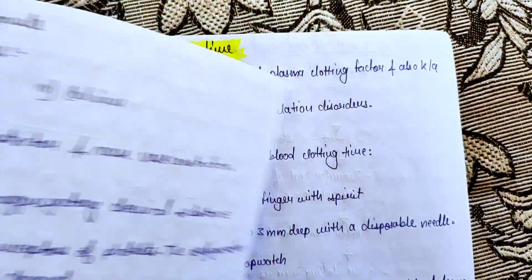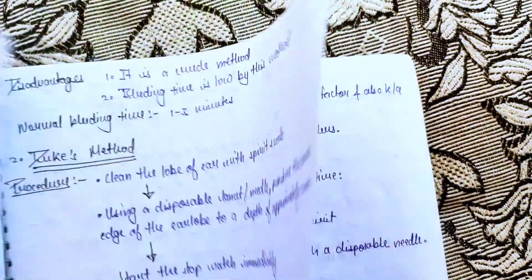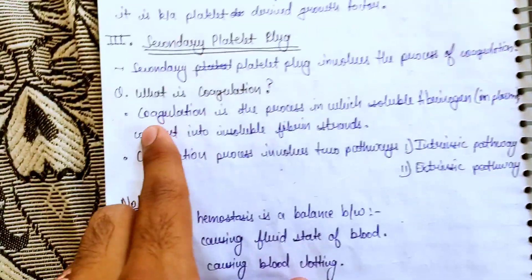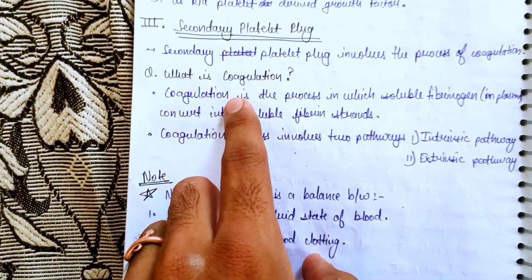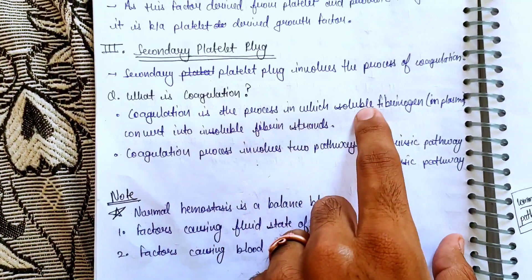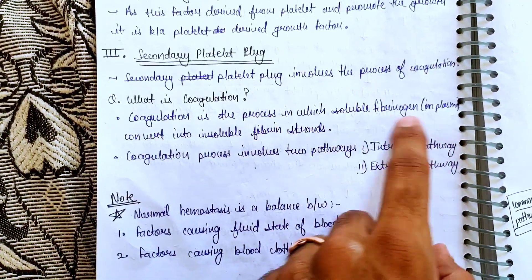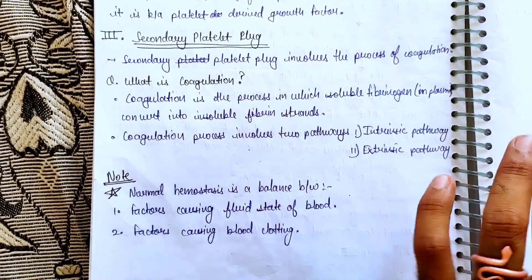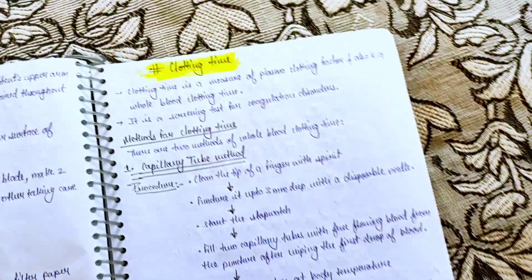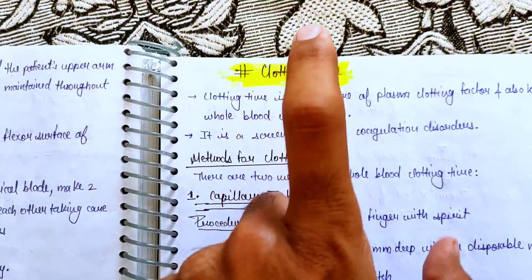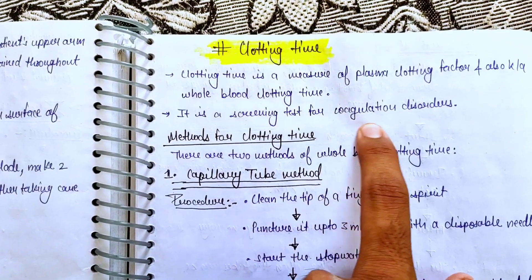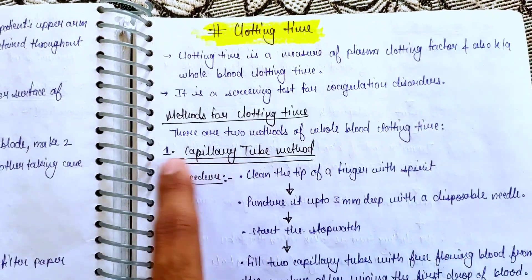We have seen this in previous videos, but let me explain again. Coagulation is the process in which Soluble Fibrinogen converts into Insoluble Fibrin Strands. Clotting Time is the Screening Test for Coagulation Disorders.